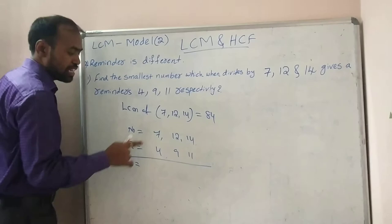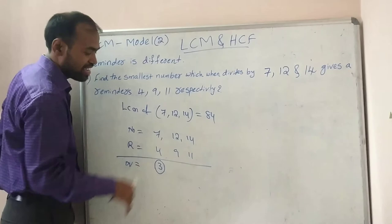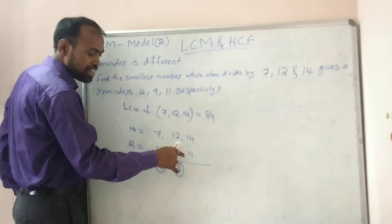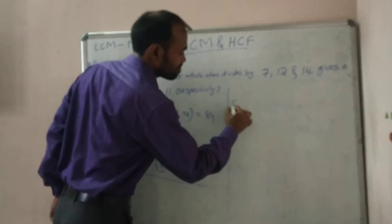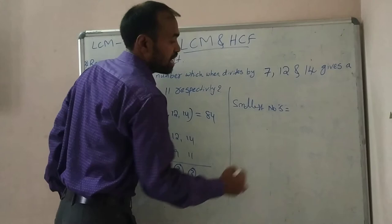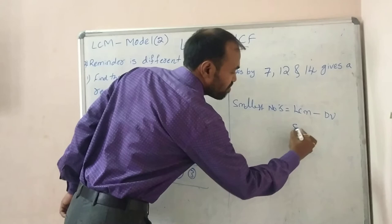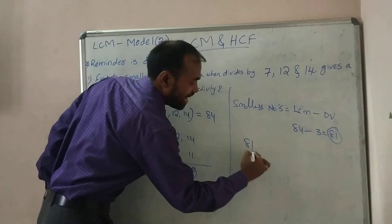Next, compute the difference values by subtracting each remainder from its divisor. 7 minus 4 equals 3. 12 minus 9 equals 3. 14 minus 11 equals 3. The difference value is 3 in each case. The smallest number is LCM minus the difference value: 84 minus 3 equals 81.